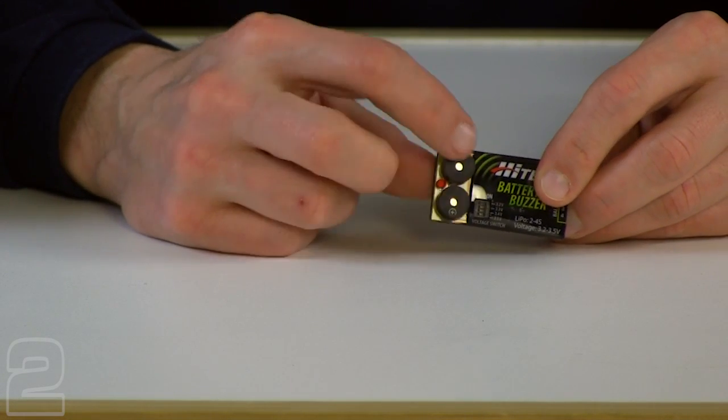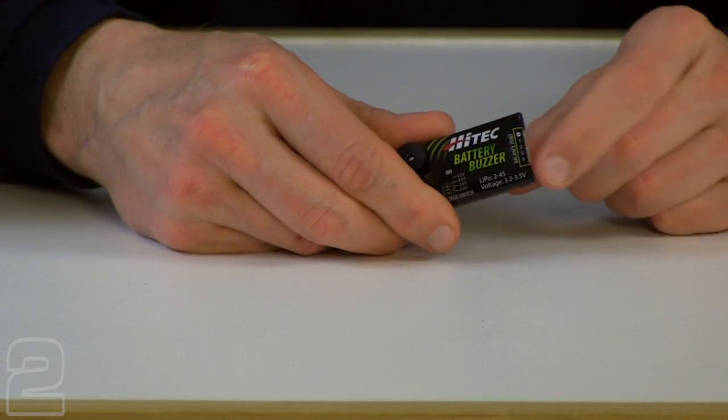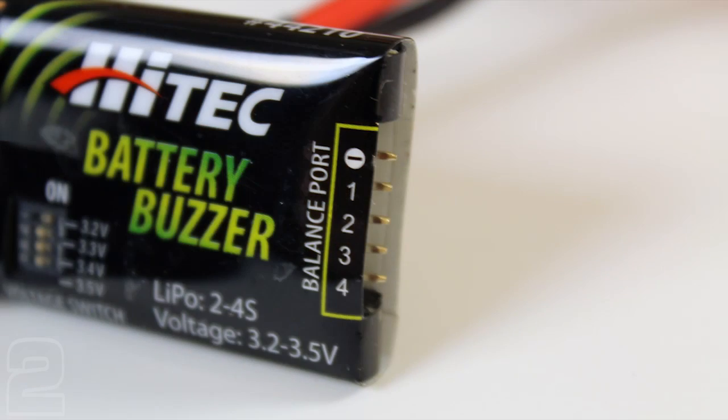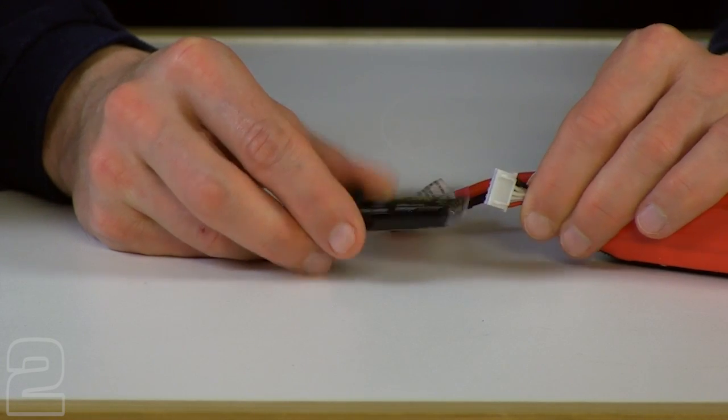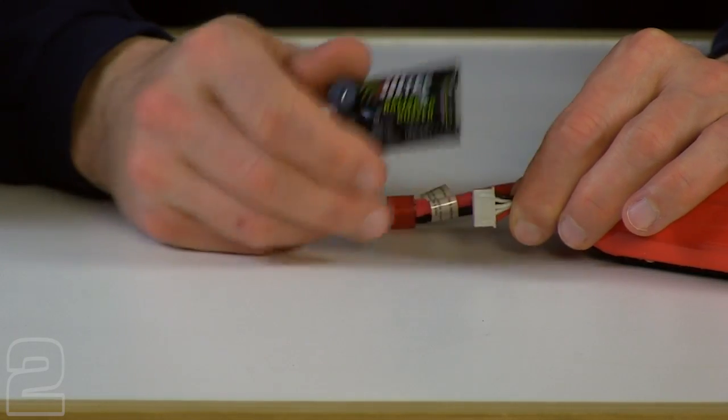So edge pin connectors, LED indicator, two annunciators and edge pin connectors at 2.54 pin pitch. So you're going to take the balancing lead of a 2, 3 or 4 cell LiPo and you're going to pay attention to the polarity. Note negative.